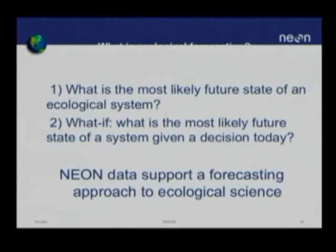The second definition is the 'what if' sort of forecast: what is the most likely future state of a system given a decision today? This is the canonical decision support question. A manager has to make a decision about a watershed, a forest, or an urban area, and they want to know the most likely outcome of choosing one option over another. That second type isn't really part of weather forecasting, but it's very clearly part of environmental management.